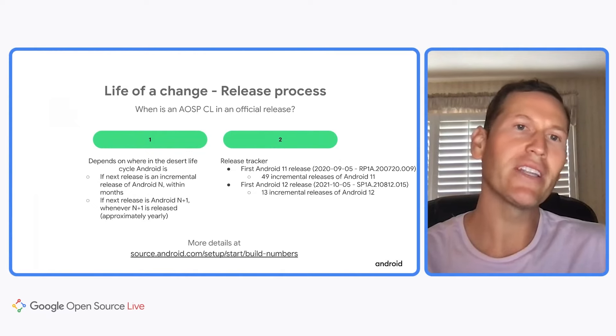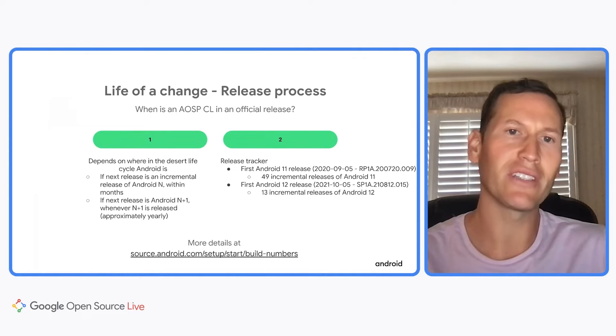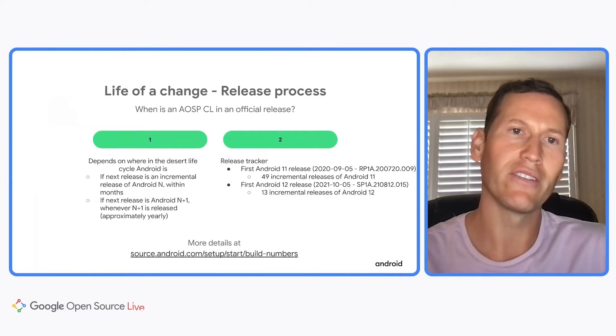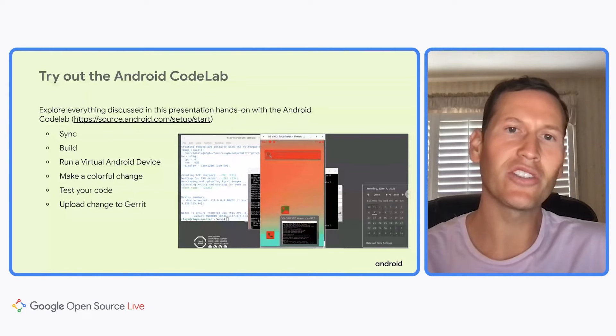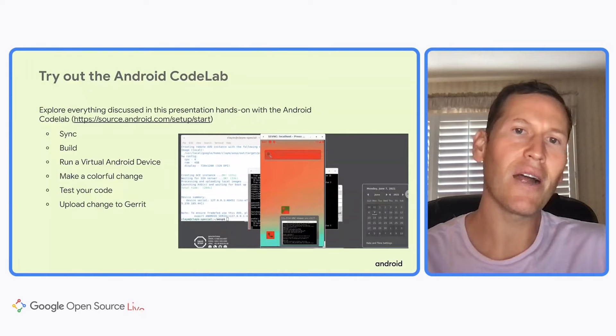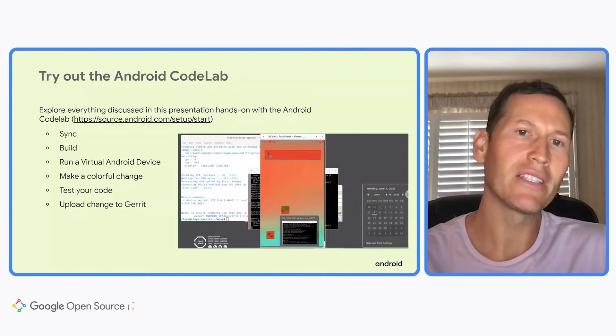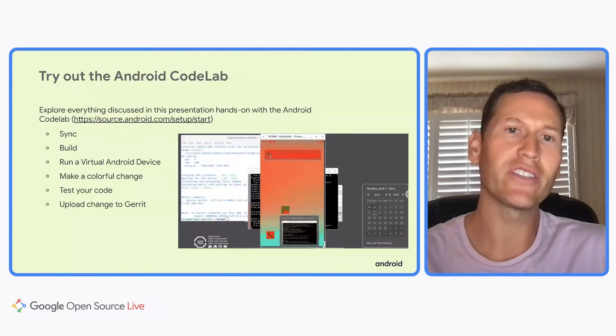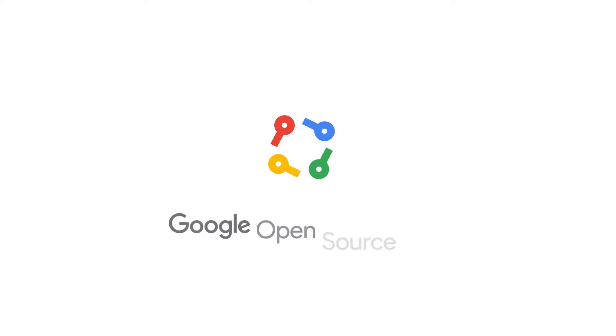You may be curious when an AOSP change will be released — typically the next incremental release, or depending on the cycle, the next major version. Android 11 had 49 incremental releases and Android 12 has had 13 releases so far. After these sessions, we encourage you to try out the Android Codelab at source.android.com/setup/start for a hands-on opportunity to explore everything discussed. Next, Alistair is going to do a deeper dive on the Android Cloud Platform.